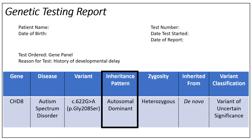Inheritance pattern refers to how the genetic condition is passed down in a family from one generation to the next. Inheritance patterns are used to help us understand if one or two disease-causing or pathogenic variants are needed to cause a condition, and whether the gene is on the X chromosome or Y chromosome. Inheritance patterns do not tell us if a genetic variant was inherited from a parent or whether the variant was found in one or both copies of the gene. Here you might see terms like autosomal dominant, autosomal recessive, or X-linked. In this example report, we see autosomal dominant.